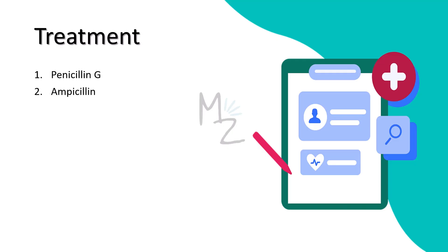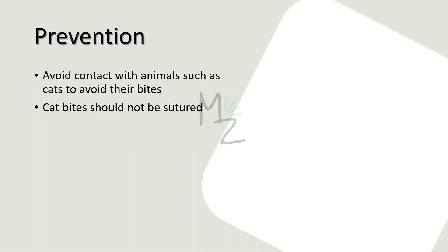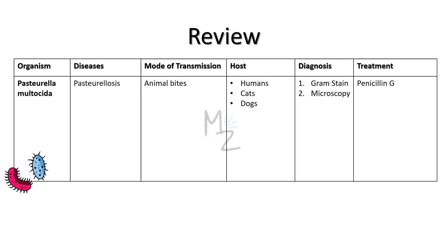Treatment: Penicillin G is the treatment of choice, and there is no significant antibiotic resistance. People who have been bitten by a cat should be given ampicillin to prevent Pasteurella multocida infection. Prevention: avoid contact with animals such as cats to avoid their bites. Animal bites, especially cat bites, should not be sutured, as suturing can complicate the situation.